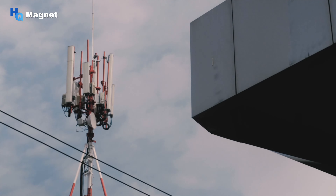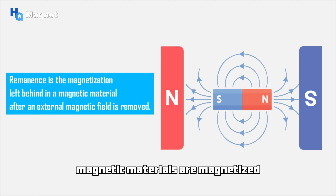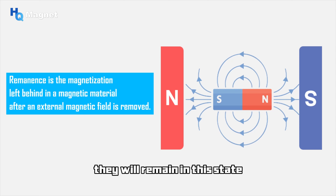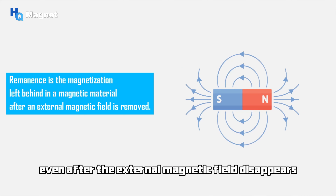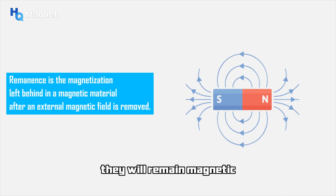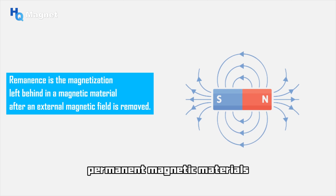Hard magnetic materials have high remanence and high coercivity. This means that once hard magnetic materials are magnetized, they will remain in this state. Even after the external magnetic field disappears, they will remain magnetic. Therefore, hard magnetic materials are also known as permanent magnetic materials.